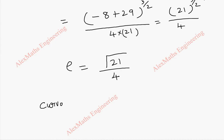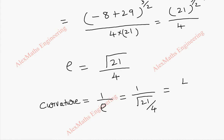From this, the value of curvature becomes 1 divided by the radius of curvature. So curvature equals 1 divided by (root 21 divided by 4), which gives 4 divided by root 21. Thank you.